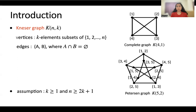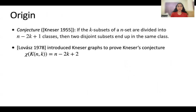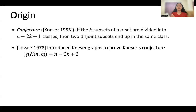Let me tell you the origin story of Kneser graphs. In 1955, Kneser conjectured that if the k-subsets of an n-set are divided into n minus 2k plus 1 classes, then two disjoint subsets would end up in the same class. To prove this conjecture, Lovász in 1978 introduced Kneser graphs and proved that the chromatic number of the Kneser graph equals n minus 2k plus 2, which means if we divide the k-subsets into n minus 2k plus 2 classes, then two disjoint subsets would not end up in the same class.